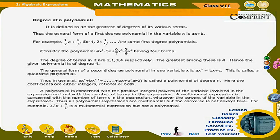Degree of a polynomial: It is defined to be the greatest of the degrees of its various terms. The general form of a first degree polynomial in variable x is ax + b. For example: (1/2)x + 1/3, 5x − 4, 2x − 1/5 are first degree polynomials. Consider the polynomial 4x² − 5x + 6x³/7 − 5x⁴/6, having 4 terms. The degrees of the terms are 2, 1, 3, 4 respectively. The greatest among these is 4; hence the given polynomial is of degree 4.